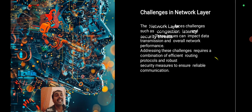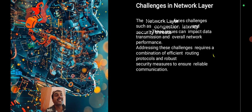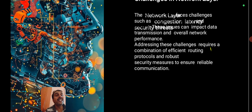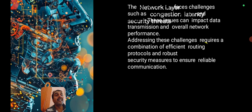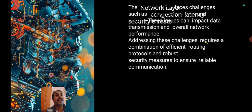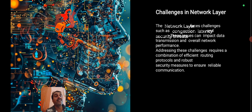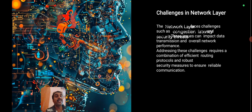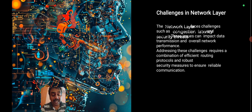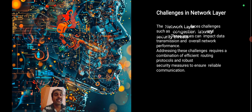Challenges of the network layer include congestion control and data security. These can impact data transmission and overall network performance. Congestion occurs when a fast transmitter overwhelms a slow receiver, creating traffic. Addressing these challenges requires a combination of efficient routing protocols and robust security measures to ensure reliable communication.